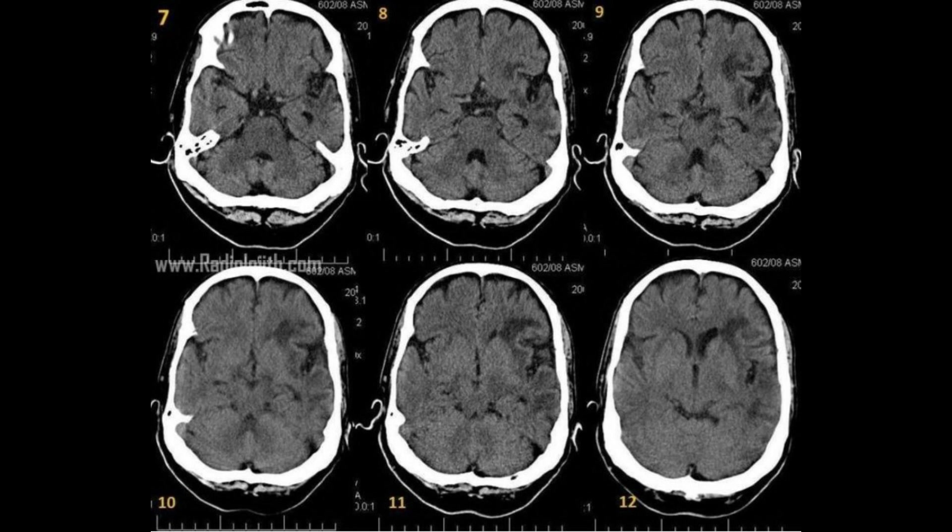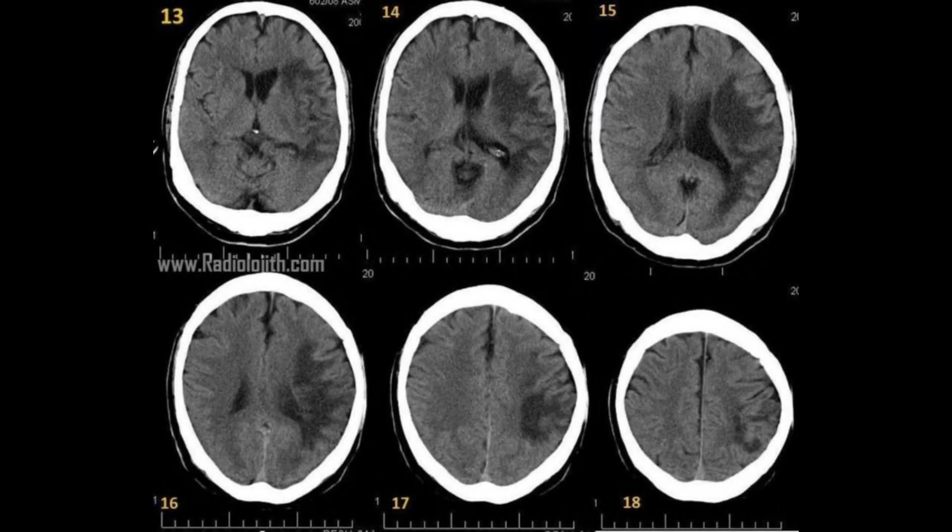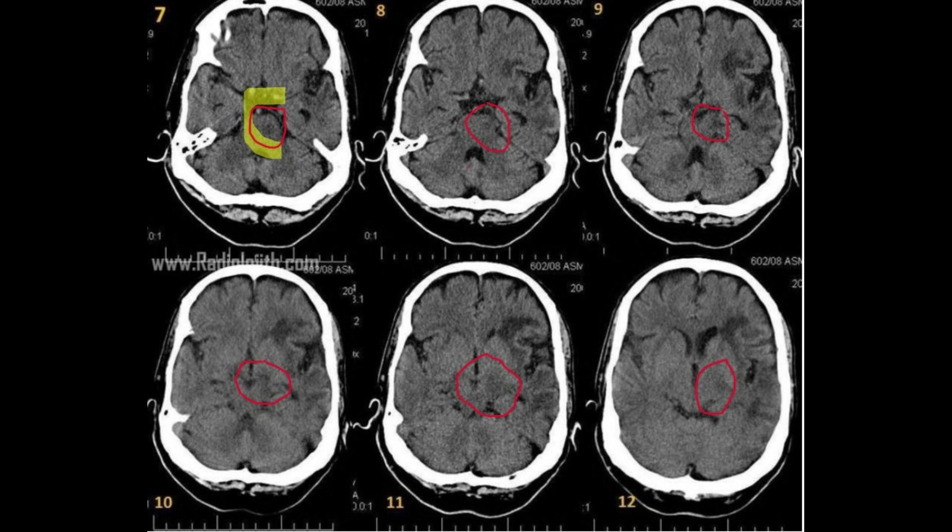Are you ready? Let's go. We can see a well-defined wedge-shaped hypodensity in the left basal ganglionic region extending to the left corona radiata and the left cerebral hemisphere, sparing the gray matter. It's easy to see the dilatation of the left lateral ventricle, the left sylvian cistern, and loss of the left cortical sulci.